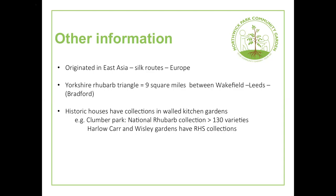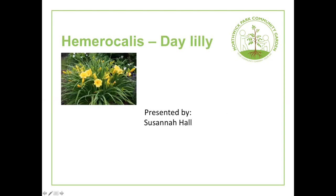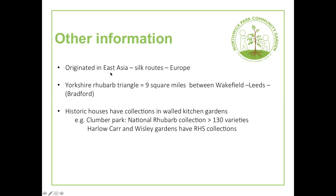Other health benefits: rhubarb is a good source of vitamin K — good for blood clotting and bone health — plus fibre, calcium, vitamin C, and antioxidants. Technically it should be described as a vegetable because it's the stalks you eat, not a fruit. A funny story: Teresa's younger sister, when only about two, used to go to the end of the garden and pick the stalks and just eat them raw because she really liked them.